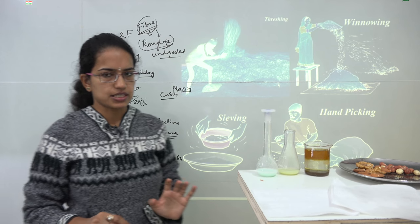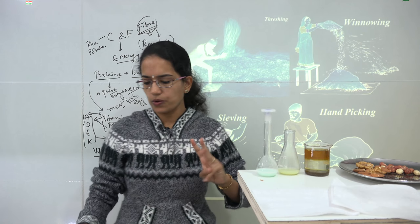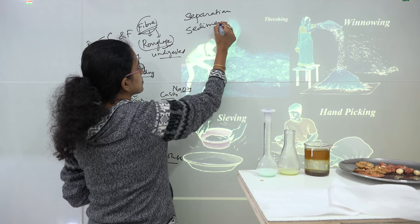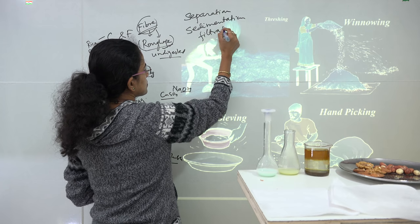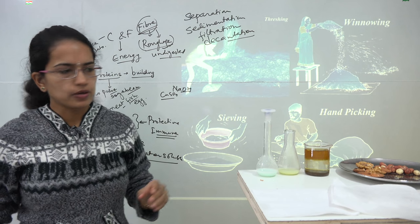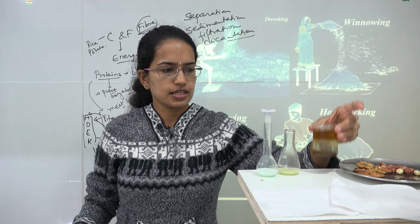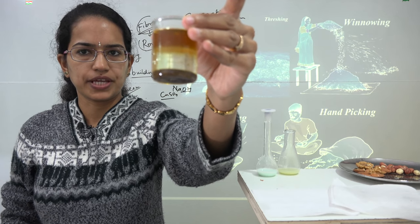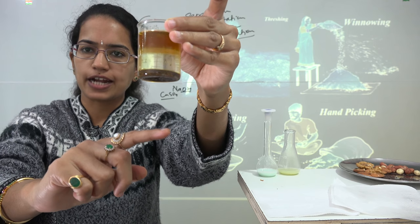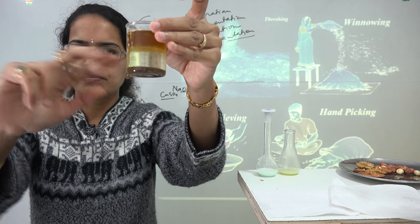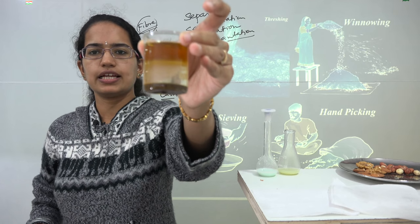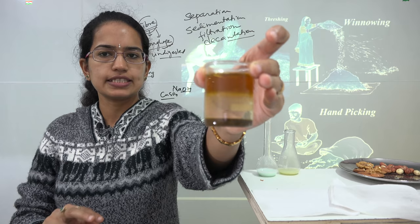The next set of methods includes separation, sedimentation, filtration, and decantation. In a flask with three layers — mustard oil on top, water in the middle, and sand at the bottom — we can see the separation between oil and water. These two liquids occur at different levels and are clearly separated, which is the process of separation.